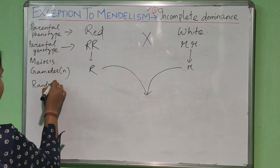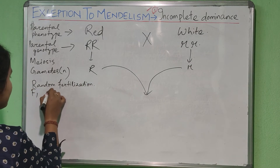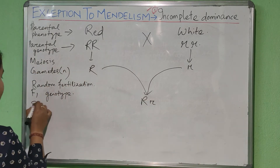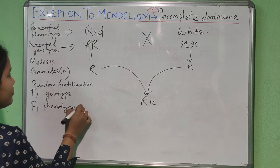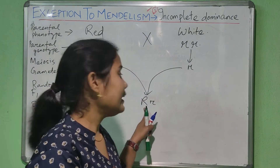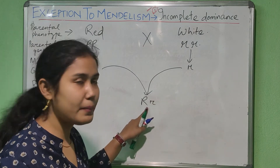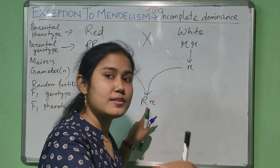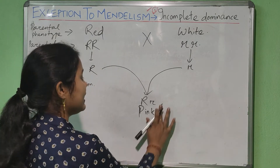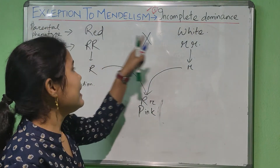After random fertilization, we will get the F1 genotype — that is capital R, small r. The F1 phenotype should be red according to Mendel's principle and first law of inheritance, as red is dominant over white. But what Carl Correns found is that this individual is pink in color, that is the intermediate color between red and white.